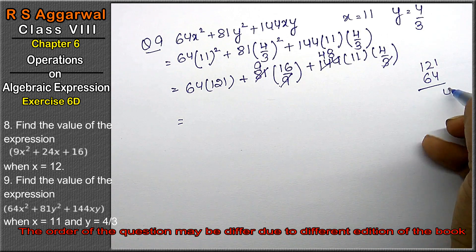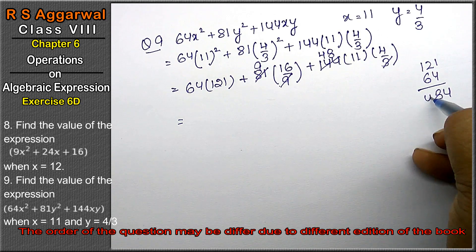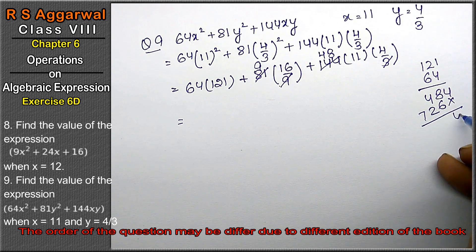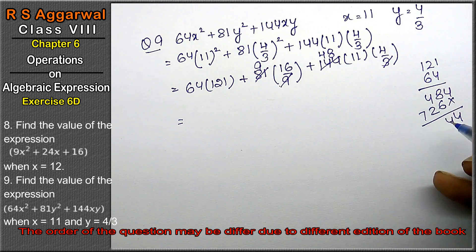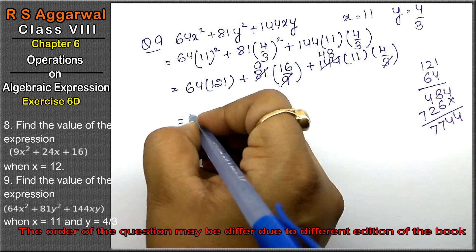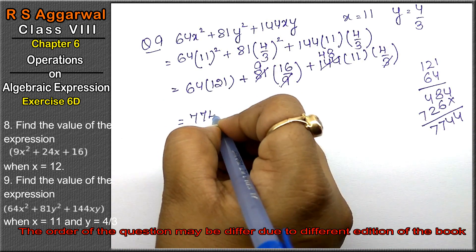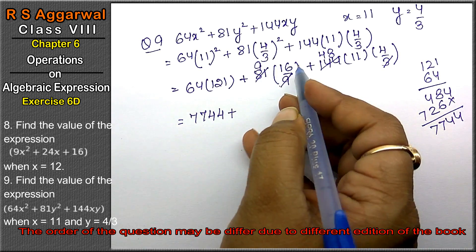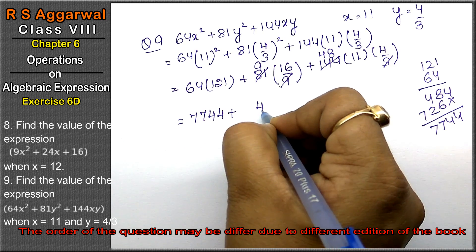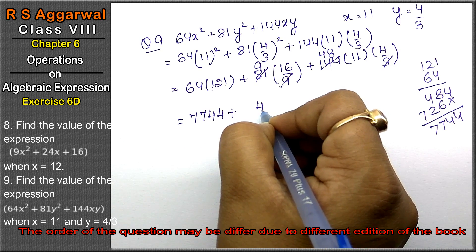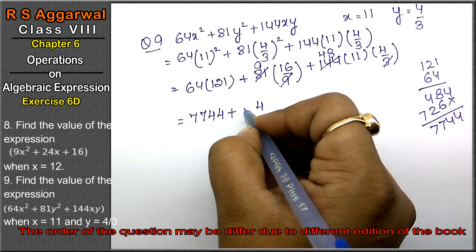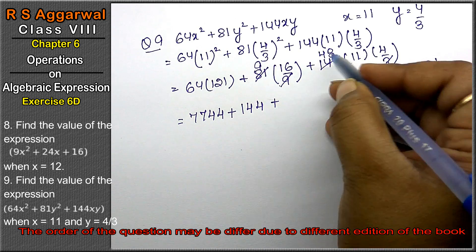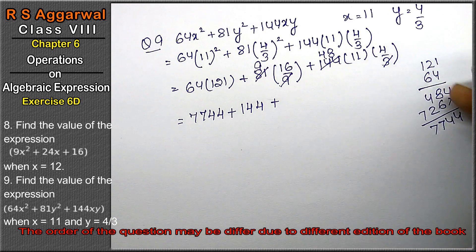So how much is 64 × 121? We compute: 4 × 1 is 4, 4 × 2 is 8, 4 × 1 is 4. Then 6 × 1 is 6, 6 × 2 is 12, 6 × 1 is 6. That gives 7744. Plus 48 × 14.